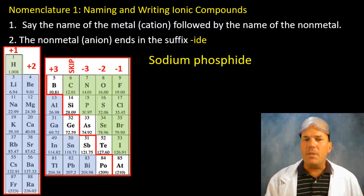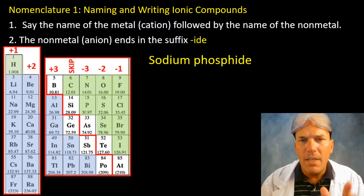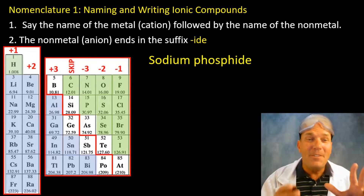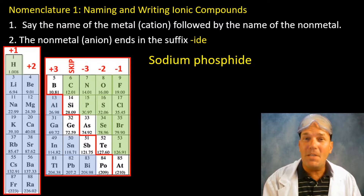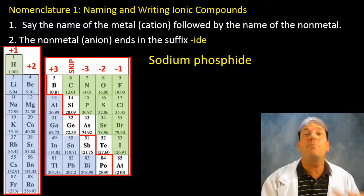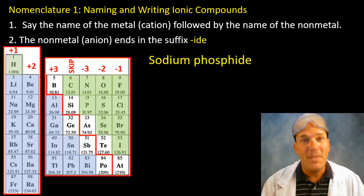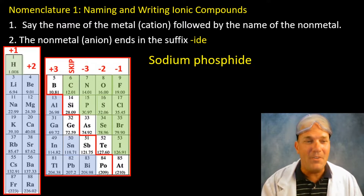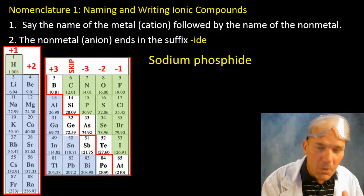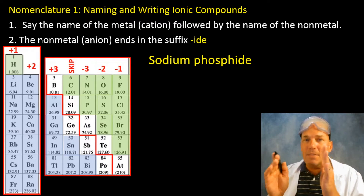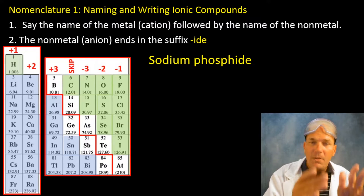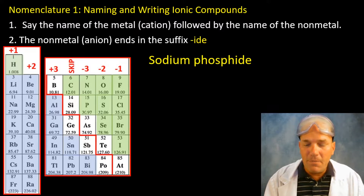Next: sodium phosphide. You might notice I've removed part of the periodic table — we don't need the transition metals portion right now, because transition metals can have more than one charge, which we'll cover in the next video. For now we're dealing with group one, group two, and group three metals, and species to the right of the stairs.